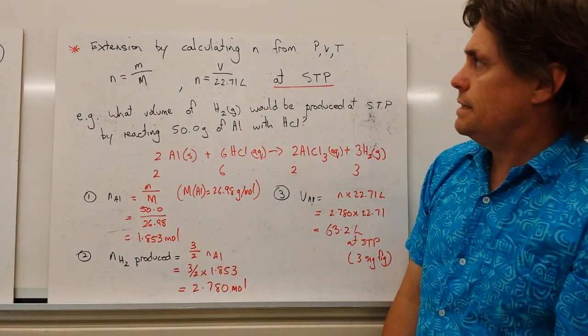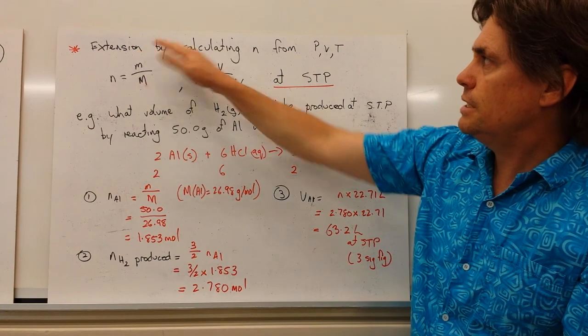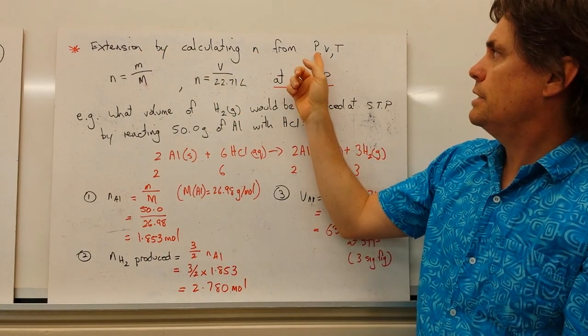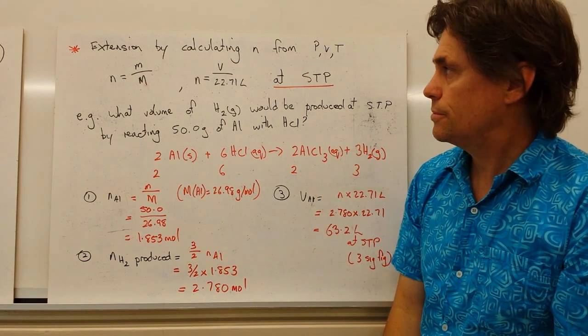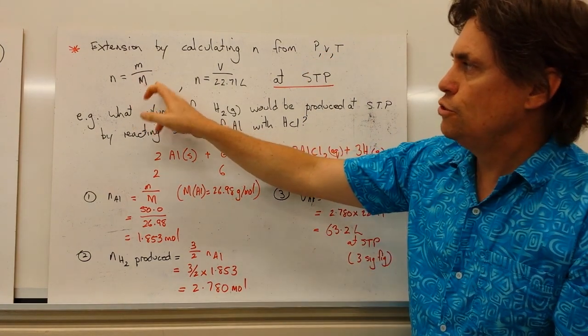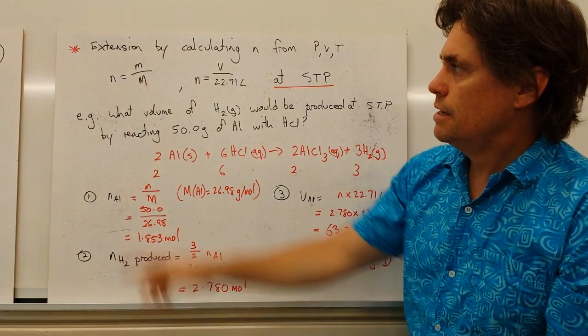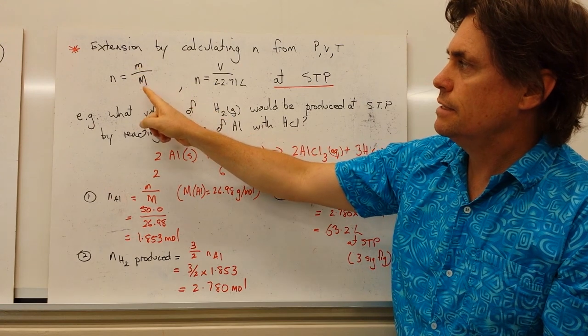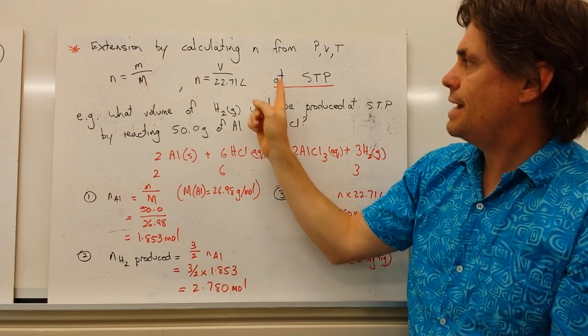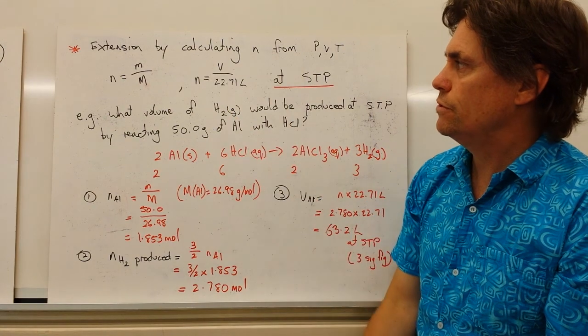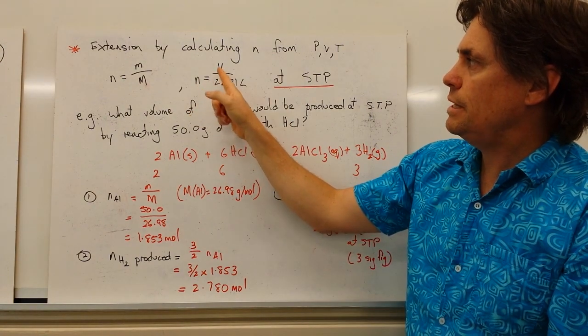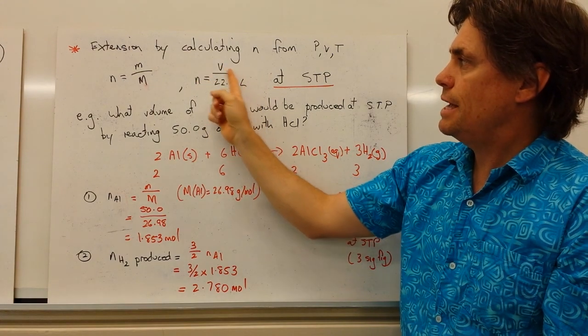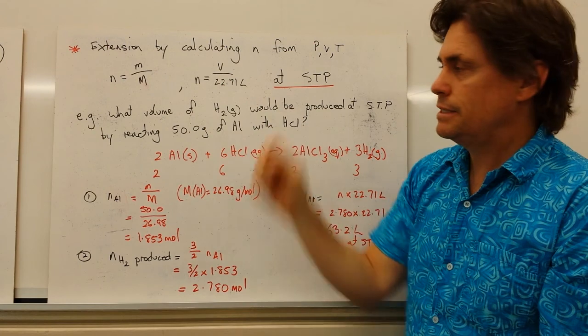Now we're going to extend this because we can actually calculate the number of moles of gas that are being produced in a system by using our pressure, volume and temperature relationship. So we've got two parts to this that we need to keep in mind. First of all the equation that we had on the other slide, the number of moles equals the mass divided by the molecular weight. And we also know that at STP, as we referred to before, the number of moles will be equal to the volume of the gas divided by the volume per mole at STP.